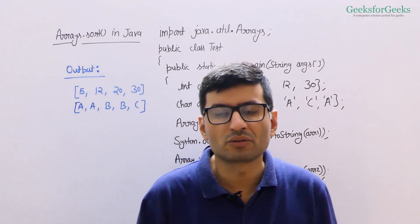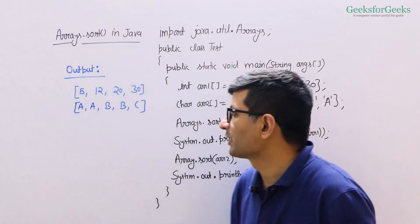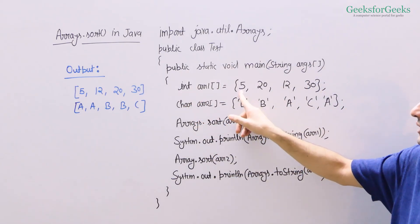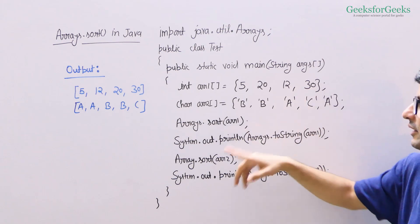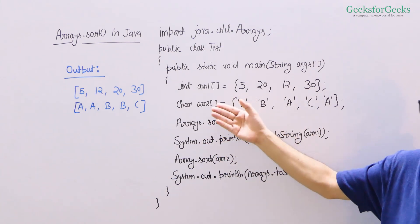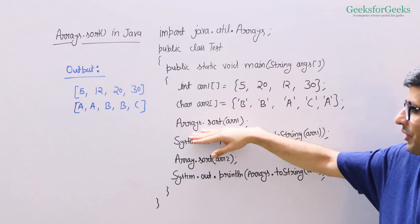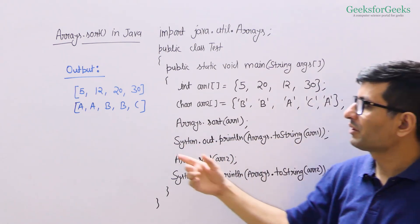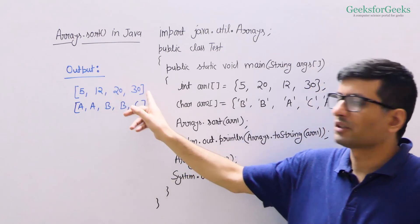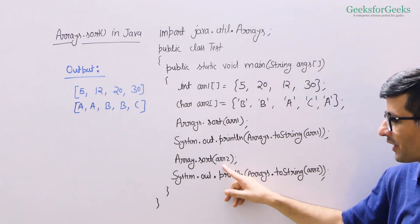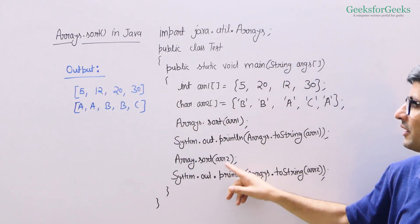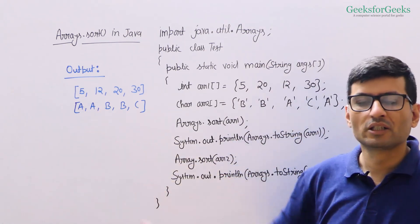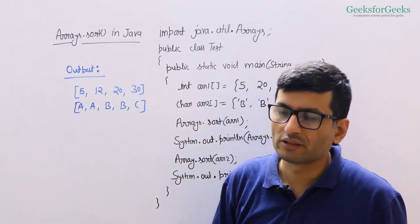Here is an example showing the working of Arrays.sort for primitive types. We have an integer array Arr1 with elements 5, 20, 12, 30 and Arr2 which is a character array. After sorting Arr1 using Arrays.sort, we get 5, 12, 20, 30. Then sorting Arr2, the character array, gives output AA, BB, C. So even if your array has duplicates, this sort function works.